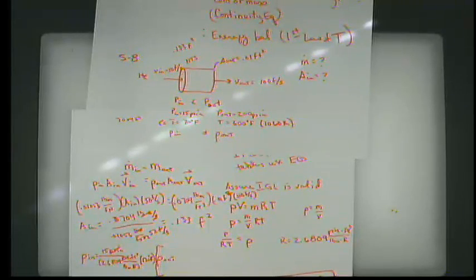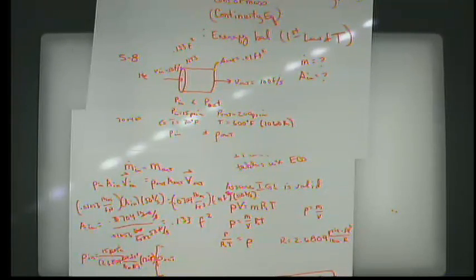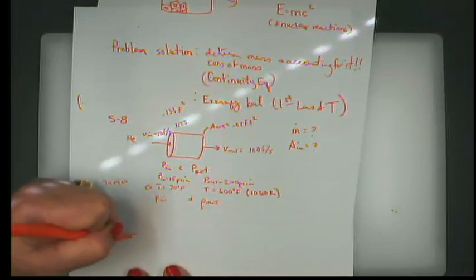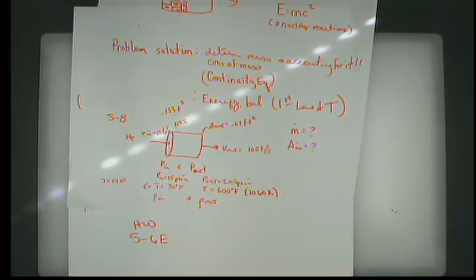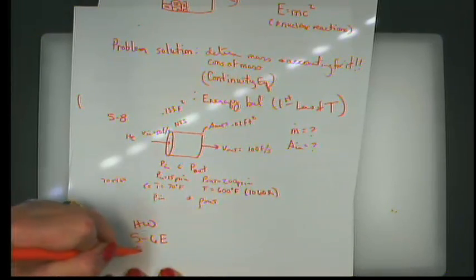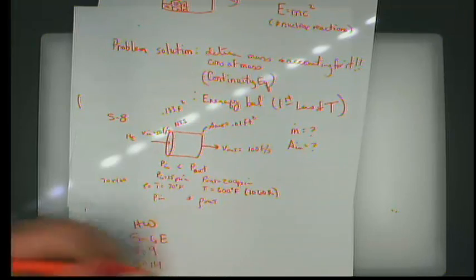That's how we use conservation of mass to find unknown data. For homework, we'll do problems 5-6E, 5-9, and 5-14. These will be posted on Moodle. We'll discuss energy balance beginning tomorrow.